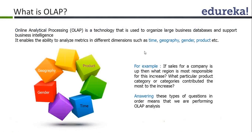What is OLAP? Online Analytical Processing. OLAP is not a right-away thing like OLTP — it is a long-term thing. It is a technology used to organize large business databases and support business intelligence. It enables the ability to analyze metrics in different dimensions such as time, geography, and product.